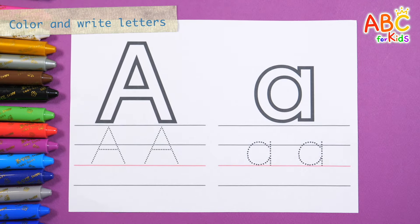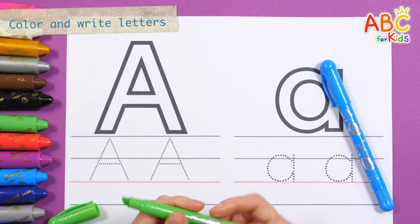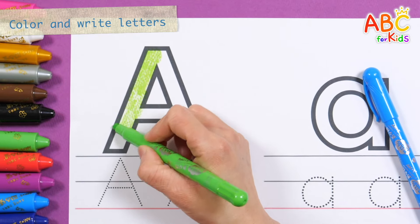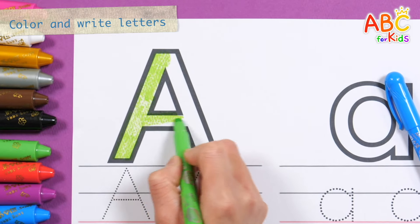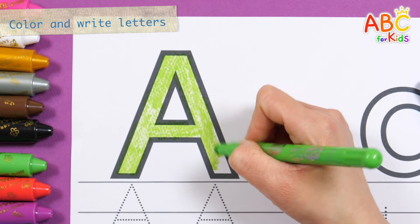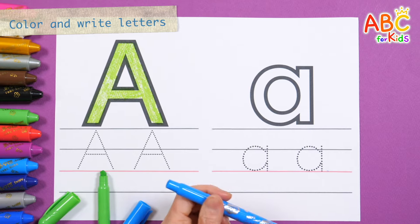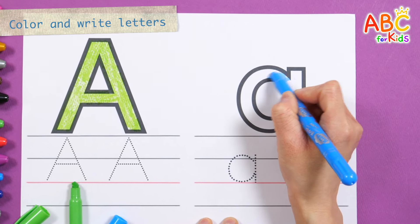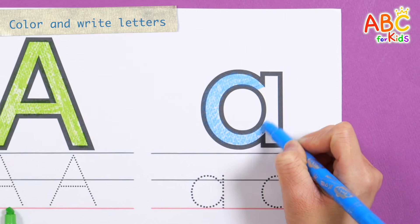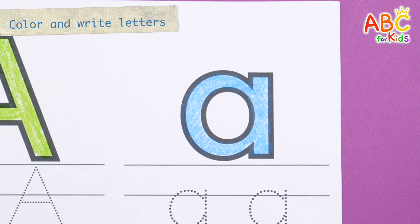Shall we practice coloring the alphabet and writing it along the dotted lines? First, let's color the uppercase letter A baby green. Old MacDonald had a farm, E-I-E-I-O, and on his farm he had a cat. Uppercase A. Shall we color the lowercase letter a baby blue? Lowercase A.